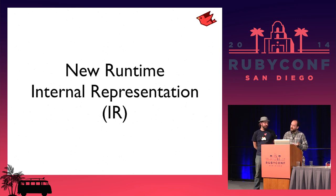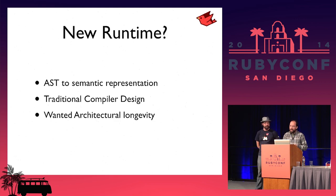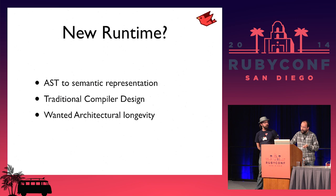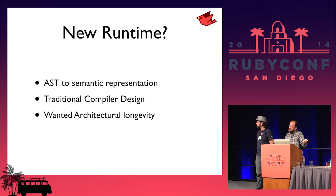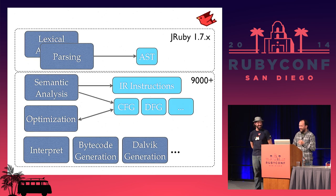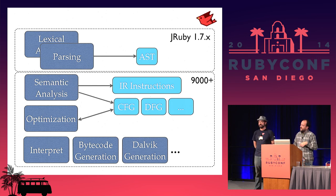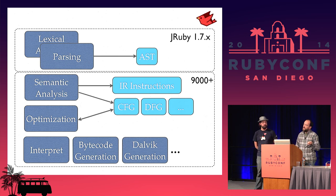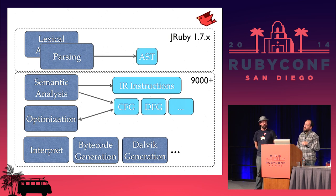Now we're going to talk about the new runtime. It was uninventively named IR for Internal Representation. We didn't like working with abstract syntax trees and wanted something that represented semantics better. Most importantly, we wanted something where a new contributor who had taken a compilers course or read a book on compilers would find the vocabulary and algorithms familiar so they can jump in easily — and so we can get interns to come work on the compiler.